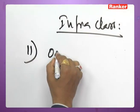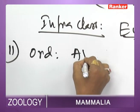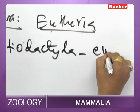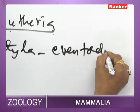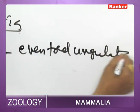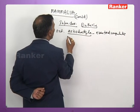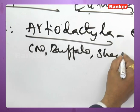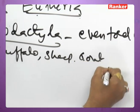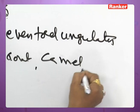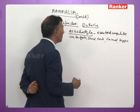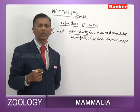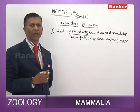Order Artiodactyla — even-toed ungulates — includes cows, buffalo, sheep, goat, camel, and hippopotamus. Artiodactyla and Perissodactyla together are called ungulates.